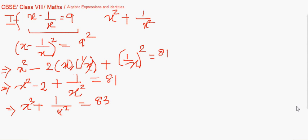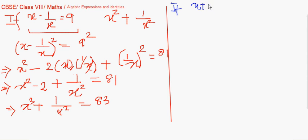Carrying 2 to the other side, x squared plus 1/x squared equals 83. Both the first and second identities can be applied to find such values. Here is one more type of application: if x + y is given as 12 and xy is given as 14, we need to find the value of x squared plus y squared.